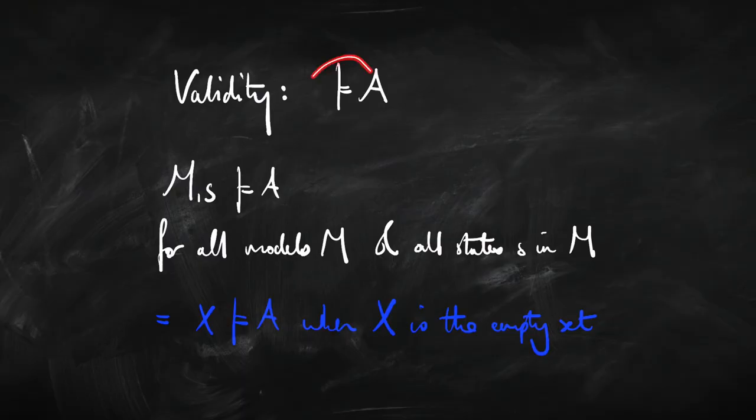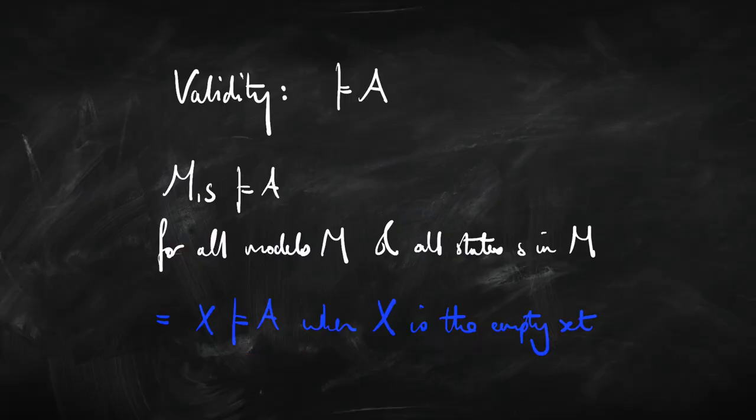Counterexamples are going to be important later on when we're constructing models — we'll often try to invalidate an entailment by drawing out a countermodel. Validity is basically entailment from zero premises: a sentence is valid when it's true at every state in every model. A counterexample to validity is just some state in some model where the sentence isn't true. You can think of validity as a special case of entailment when the set of premises is empty.